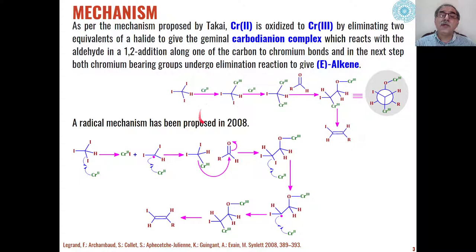Now, in recent years, in addition to this mechanism, a radical mechanism has also been proposed by Legrand. According to Legrand, a free radical is formed from iodoform on reaction with chromium(II). Chromium(II) iodide is formed and this type of free radical is formed which further reacts with chromium(II) to give us the chromium(III) intermediate which was also formed in the first mechanism given by Takai.